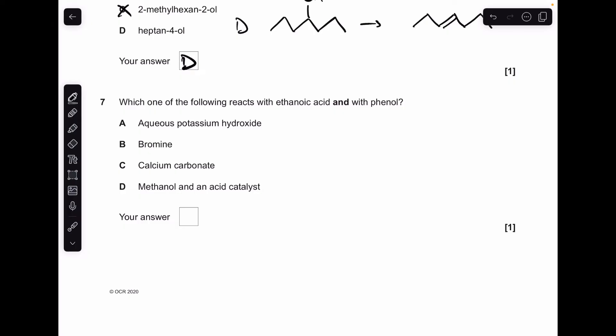Moving on to number seven. Which of the following reacts with ethanoic acid and with phenol? Thank you, exam board. A is actually the right answer. I'll just quickly explain why the other three aren't. Bromine will react with phenol, but it won't react with ethanoic acid. Calcium carbonate will react with ethanoic acid, but it won't react with phenol. And methanol with an acid catalyst will react with ethanoic acid, but it won't react with phenol. So A was right.